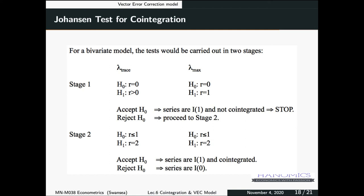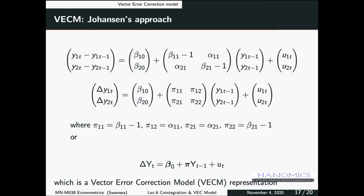Basically, what we did here is just another way to test for cointegration — this is the Johansen test for cointegration. We are building on what we learned about the error correction model and moving to the VEC model, the Vector Error Correction Model, which can have any number of variables. The difference from the first approach is that the first one is residual-based: you estimate, get the residual, and test it. With the Johansen test, you test for the rank of the pi coefficient matrix directly.